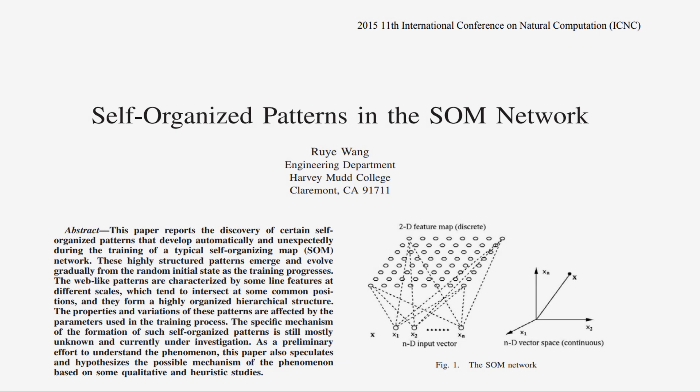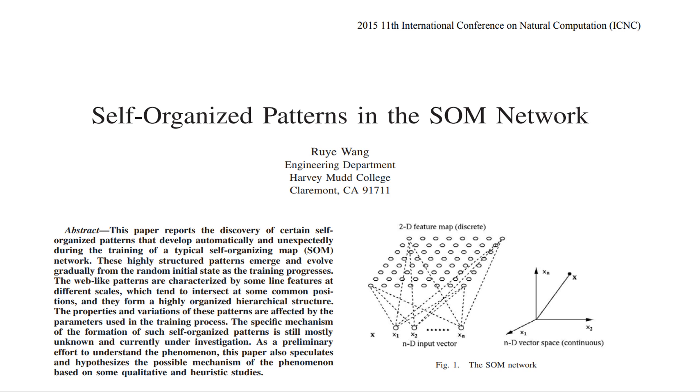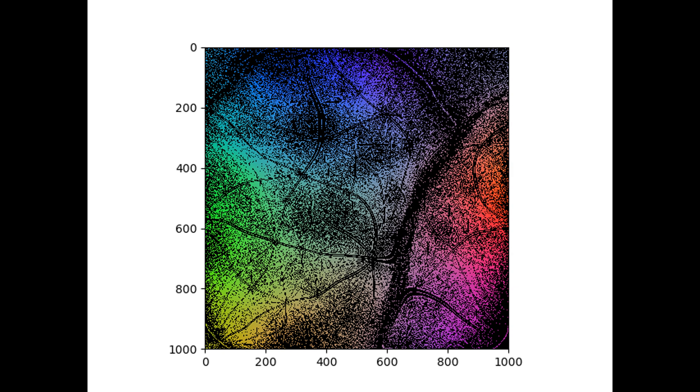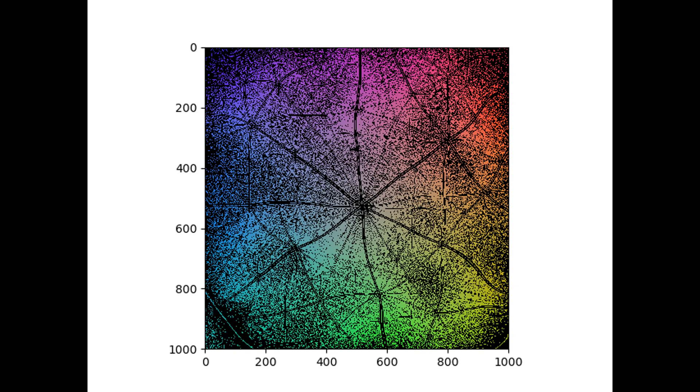In a 2015 paper published in the International Conference on Natural Computation, Roy Wong discovered mysterious emergent patterns in the SOM network when it was trained on colors.